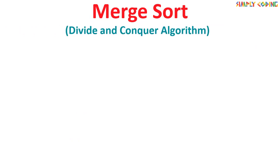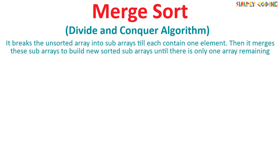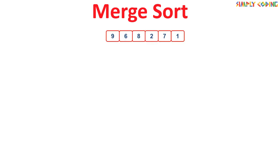Merge sort is a divide and conquer algorithm. It breaks the unsorted array into sub-arrays until each contains one element, then merges these sub-arrays to build new sorted sub-arrays until there is only one array remaining — the sorted array. Let's see how it works by taking an example list of six unsorted numbers.